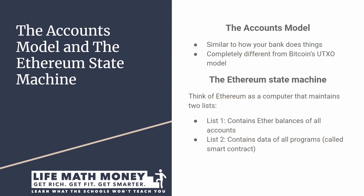The accounts model and the Ethereum state machine. Ethereum does not use the UTXO model that Bitcoin does. It uses something much simpler — the accounts and balances model, which is very much alike to what your bank uses. Don't try to relate Bitcoin's UTXO model with the accounts model that Ethereum uses. They're very different and they are designed to achieve very different purposes.